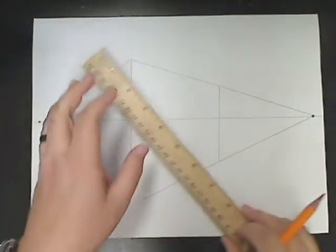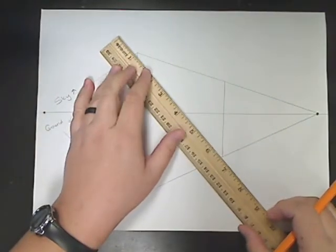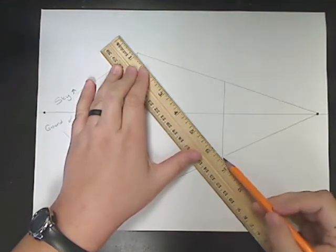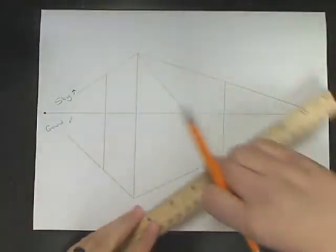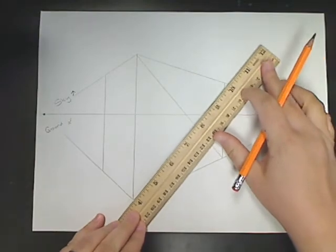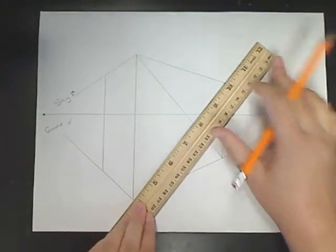So to find the middle where my door should be, I'm going to draw an X connecting my corners together. And I'm going to do this very lightly so that I can erase this later, because this is a guideline. It's not going to stay here forever.